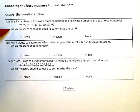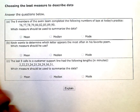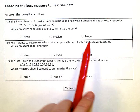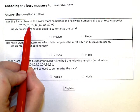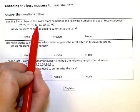Which measure should be used to summarize the data? Okay, now we have our choice between mean, median, and mode. Now the mode is the one that occurs most frequently and these look like they have already been put in order for me: 76, 77, 78, 79, 80, 82, 85, 89, and 90.